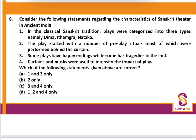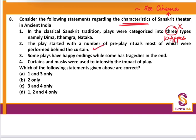Consider the following statements about characteristics of Sanskrit theatre in ancient India. In classical Sanskrit traditions, plays were categorized into 10 types — not 3. The play started with a number of pre-play rituals, most performed behind the curtain — absolutely correct. Every play had a happy ending; there were no tragedies. The society was patriarchal, so a male protagonist was used. Curtains were used, but no masks — so that statement is incorrect. Only statement 2 is correct.